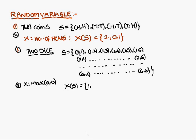In the first ordered pair, the maximum number is one. In the second ordered pair, the maximum number is two. Then three, four, five, six like this. If you consider the second row, (2,1) — the maximum number is two, already written. In this ordered pair the maximum number is six, already written in set notation. For (6,6), the maximum number is six, that also written. This is the way to understand the random variable.